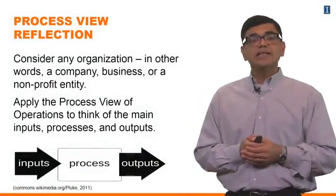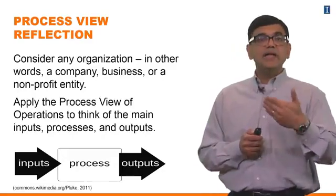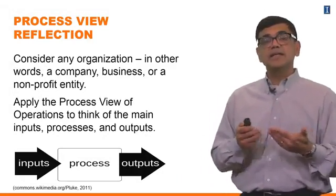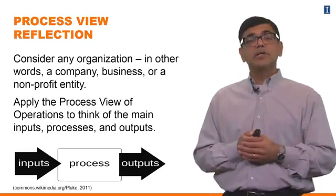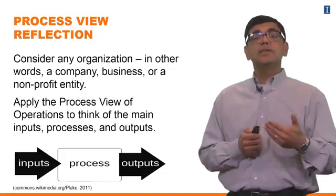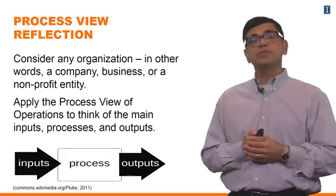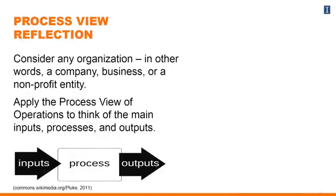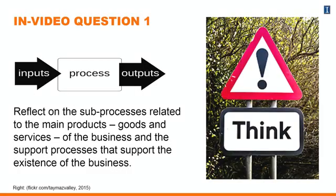What I'd like you to do is use this input-process-output view and apply it to any organization you know of — any company, whether a profit-making business or a non-profit entity. Apply the process view and think about the main outcomes that this organization produces. I'd also like you to reflect on some of the sub-processes for these core processes — the interim things the organization has to do to get things done — and finally, the support processes that support the existence of the business.